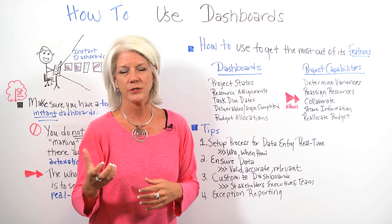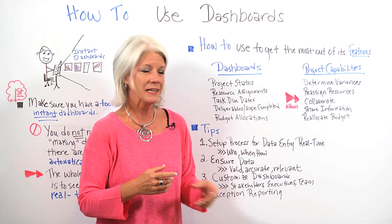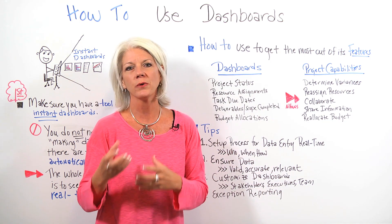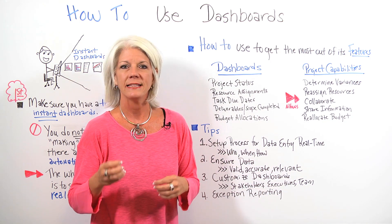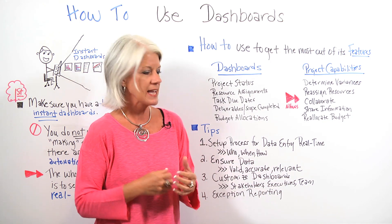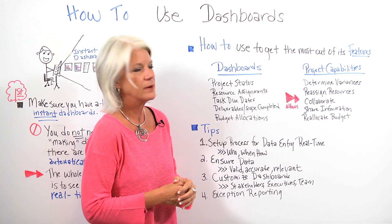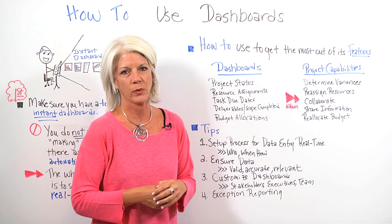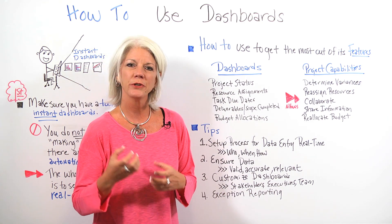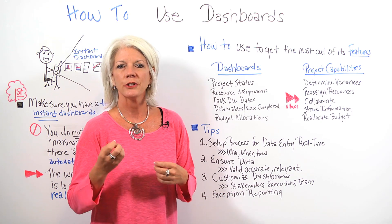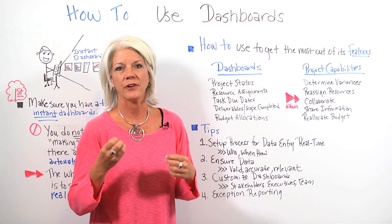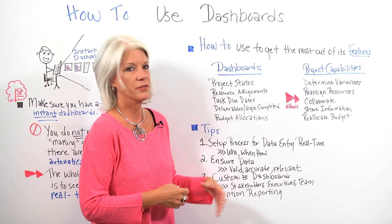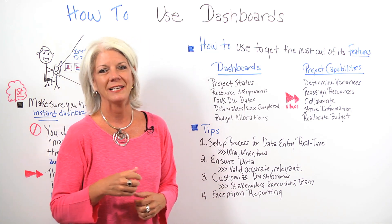Project team members are going to want more details and will only be interested in the tasks that they have due. Also, a big tip is exception reporting — when you look at your dashboards, focus on things that are not being completed so you can get those back on track.